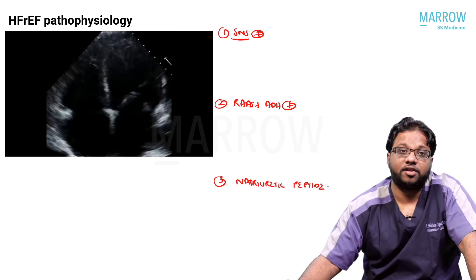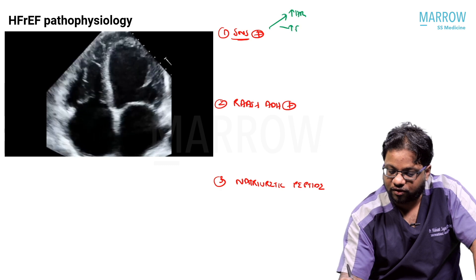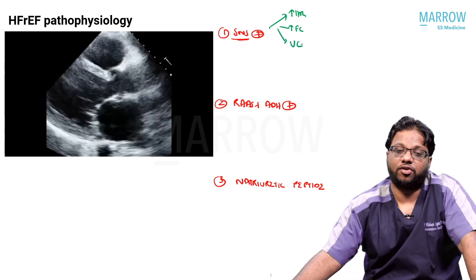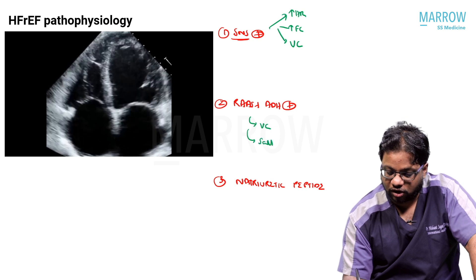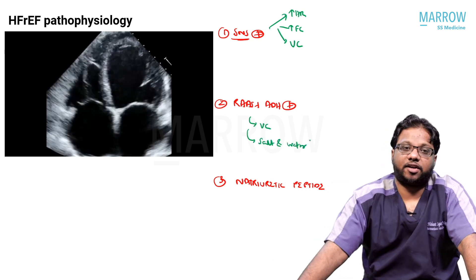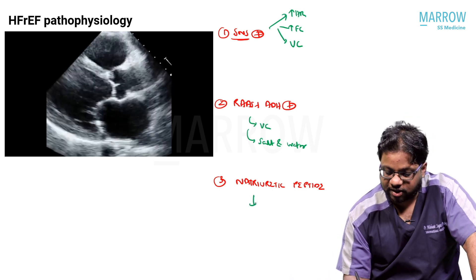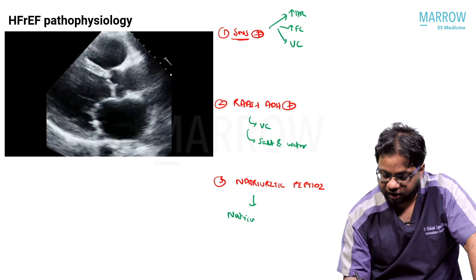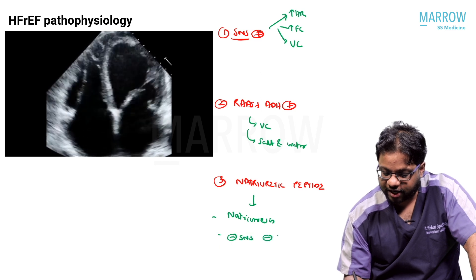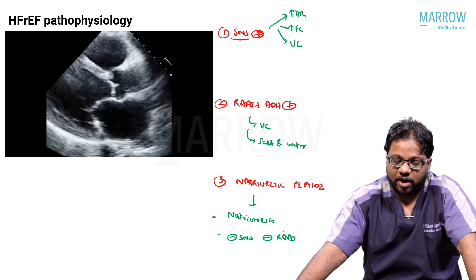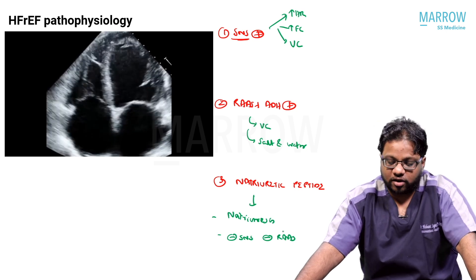When SNS is activated: increased heart rate, increased force of contraction, and vasoconstriction. When RAAS is stimulated: angiotensin causes vasoconstriction, aldosterone causes salt and water retention, and ADH causes free water retention (water retained more than salt). The natriuretic peptide system causes natriuresis — salt and water excretion — and inhibits the SNS and RAAS; it is also anti-fibrotic with many beneficial effects. SNS and RAAS activation, although helpful short-term, is harmful long-term.